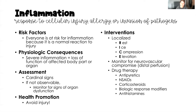For localized inflammation, I like to think about the acronym RICE. R is for rest, I is for ice, C is for compress, and E is for elevate. So if you've sprained your ankle, you rest the extremity, put ice on it to vasoconstrict the vessels and reduce swelling, compress it which also causes vasoconstriction and reduces swelling, and then elevate the extremity above the level of the heart.